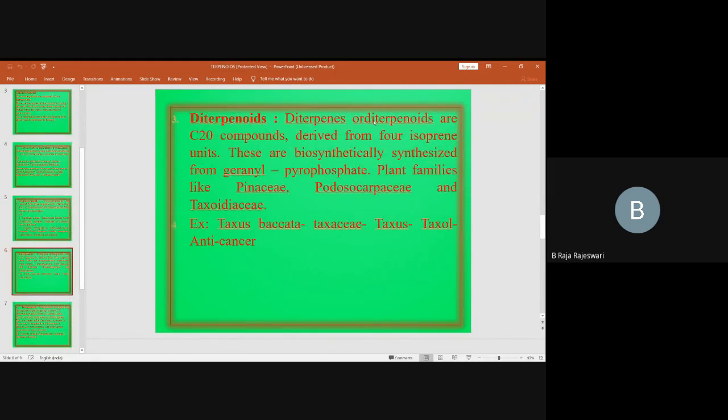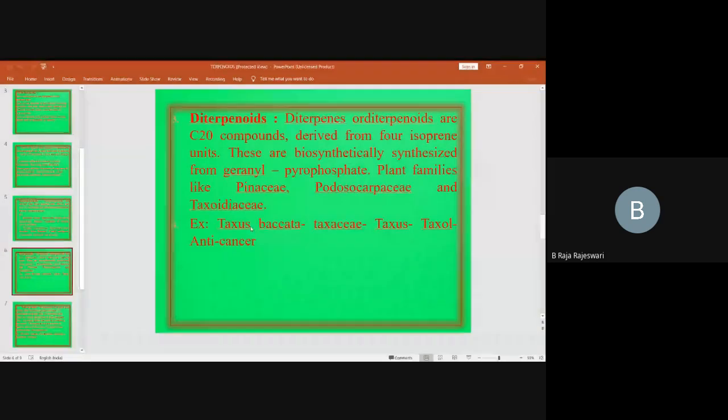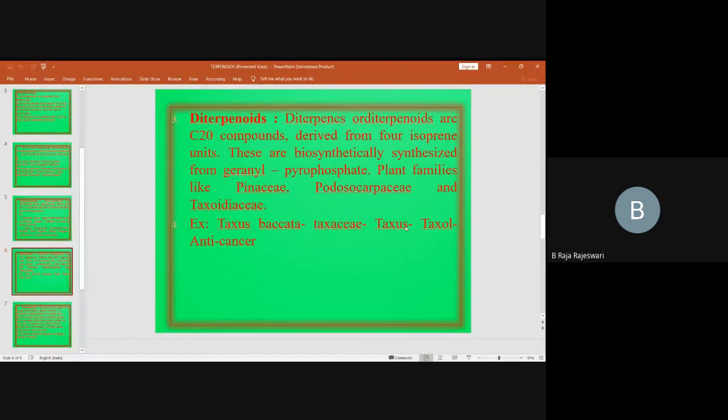Diterpenoids are C20 compounds derived from four isoprene units. These are biosynthetically synthesized from geranylgeranyl pyrophosphate. Plant families like Pinaceae, Euphorbiaceae, and Taxaceae. Example: Taxus baccata, Taxaceae, taxol, taxol. This is anti-cancer.